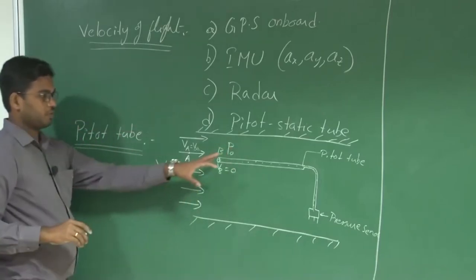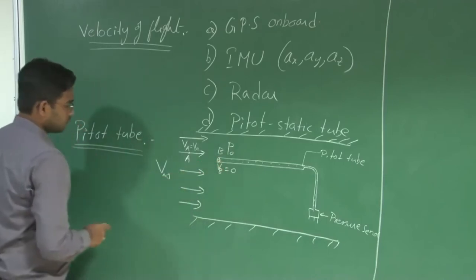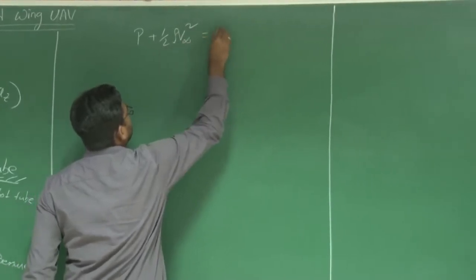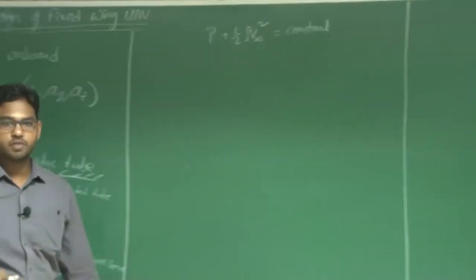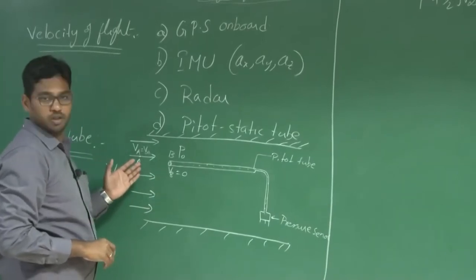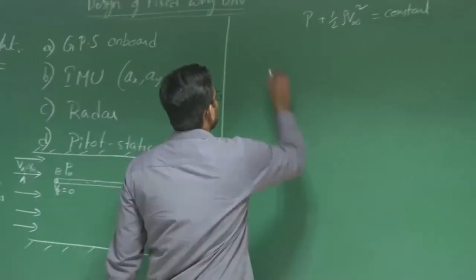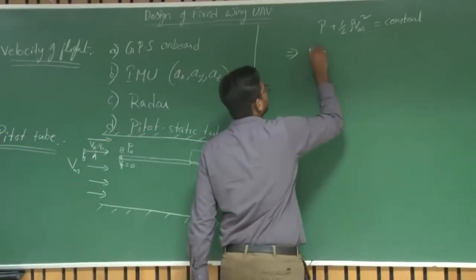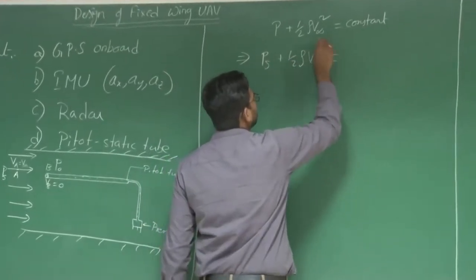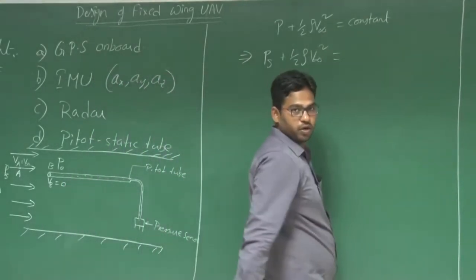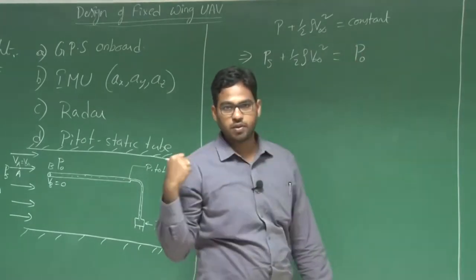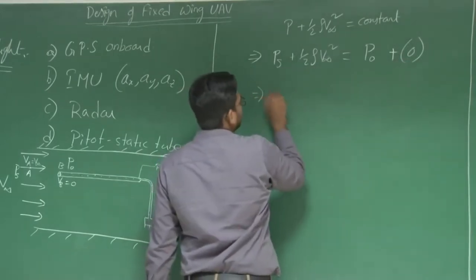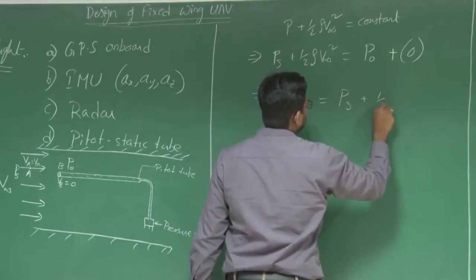Let us assume this fluid particle is brought to rest at point B isentropically — a reversible adiabatic process — with no addition or loss of heat. Since we brought the fluid element to rest at point B, the corresponding velocity there is 0. Let p₀ be the total pressure measured at point B. From Bernoulli's theorem, p + ½ρv² = constant, derived from the law of conservation of energy. Since we are not removing or adding any energy, we can apply Bernoulli's principle across points A and B. So p + ½ρv∞² equals p₀, where velocity at B is 0. Thus p₀ = ps + ½ρv∞².